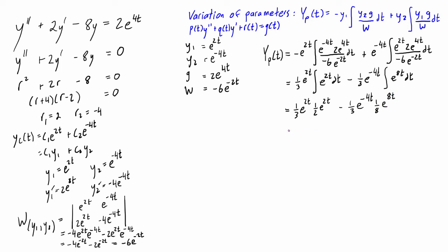And then we have minus one third e to the negative 4t times one eighth e to the 8t. So we get, basically we just have one sixth, one sixth e to the 4t minus one twenty-fourth e to the 4t. And so a sixth is just equal to four twenty-fourths e to the 4t.